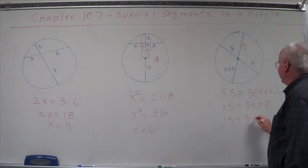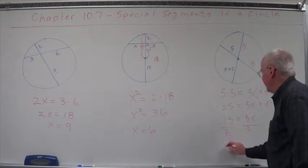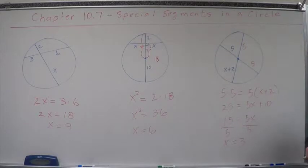So 15 equals 5x divided by 5, and you get x equals 3.